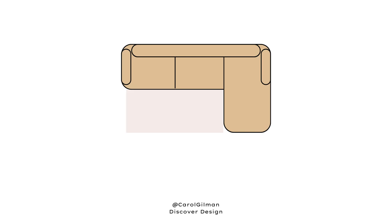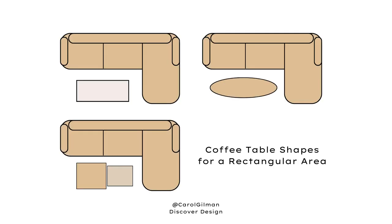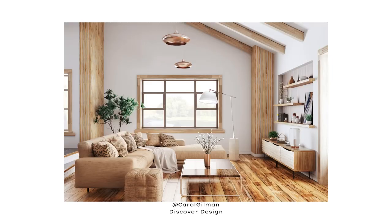If you have a sectional with a chaise — a longer seating area extending to one side — you'll naturally see a rectangular open space in front of it. The same shapes that work for a standard sofa work here too: an oval, a rectangle, or any similar grouping of tables arranged within that rectangular area.